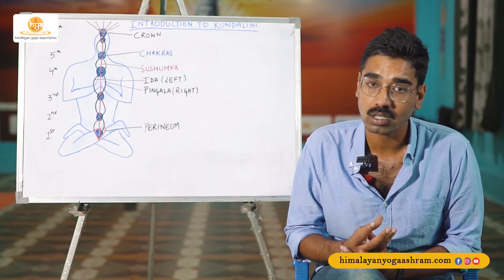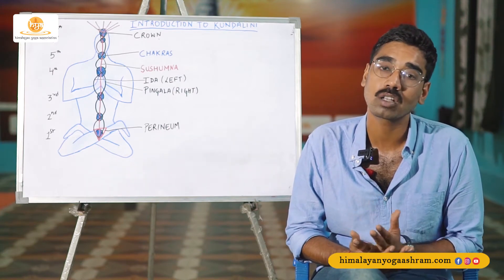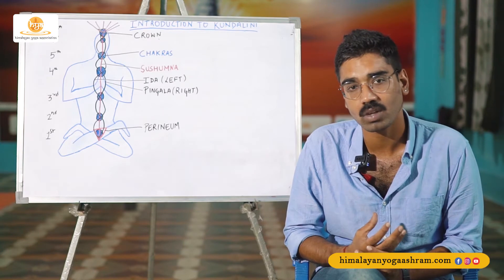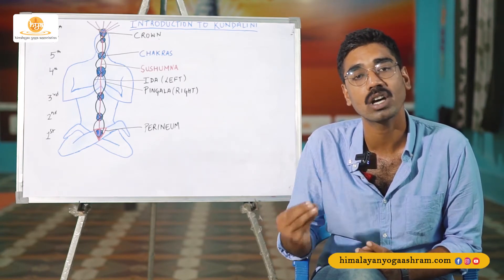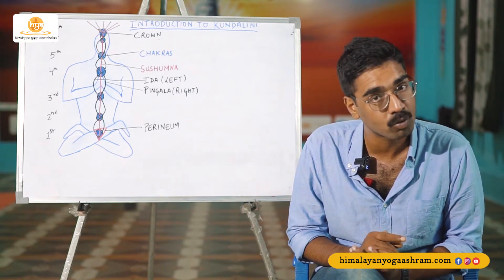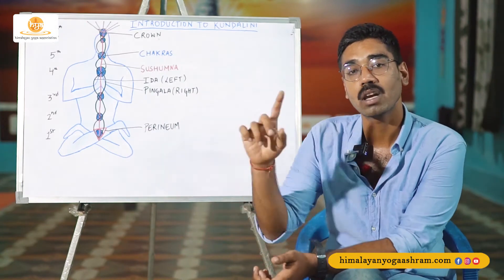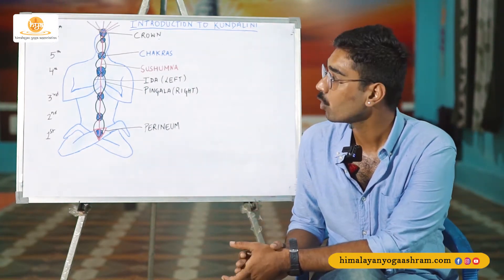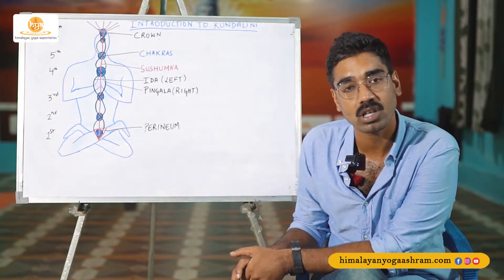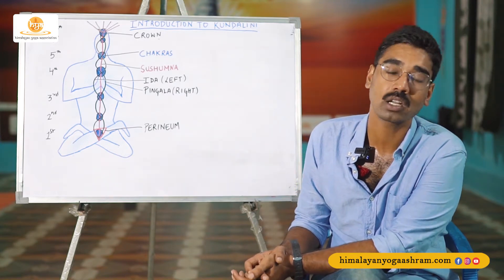Kundalini can be considered the gateway through which a normal and average human being can transform into a superhuman being — a limitless human being. Kundalini in itself is the goal of yoga. Awakening of the Kundalini is related to everything that takes place inside the human body, whether or not modern science can prove it. If you pay attention to the diagram here, you will come across a few terms and lines going upwards and downwards. You will see that there are seven chakras inside the human body. I haven't named each one of those chakras because we are going to discuss them in the upcoming video. In this video, we are just going to talk about the Kundalini and how it can be awakened.